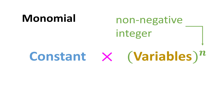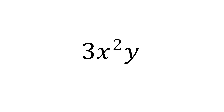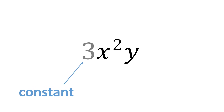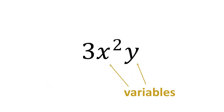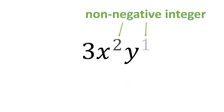For example, 3x squared y is a monomial. In this case, the constant is 3, the variables are x and y, and the exponents are 2 and 1, which are non-negative integers.